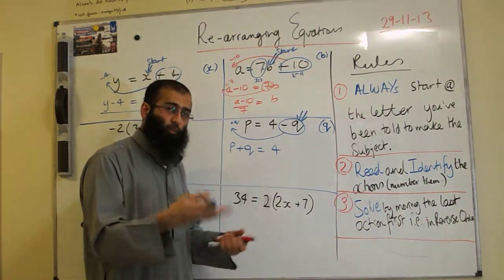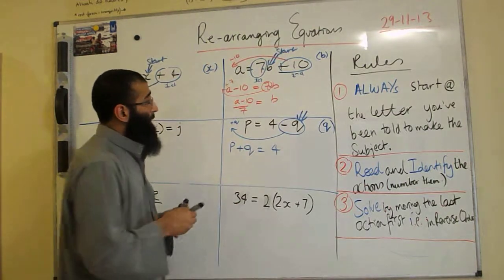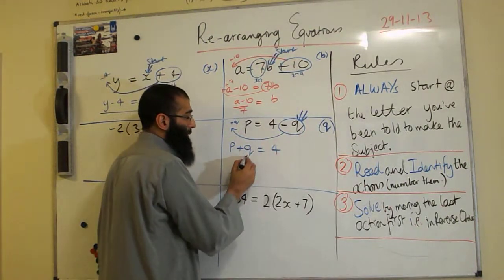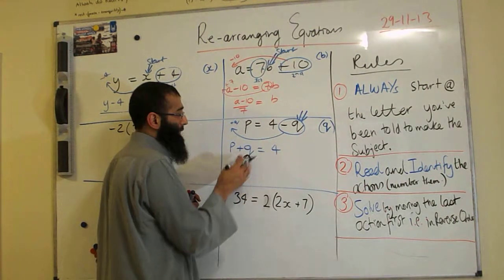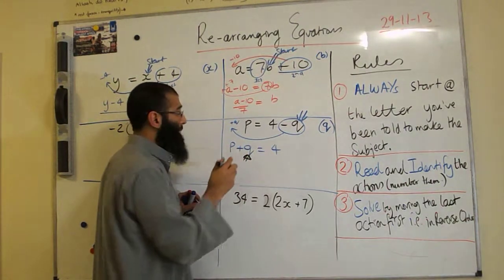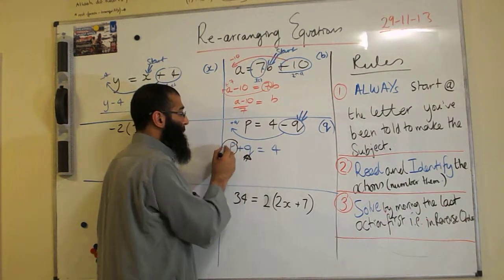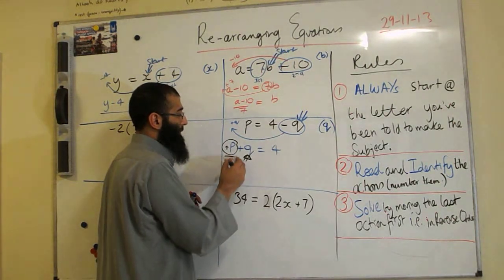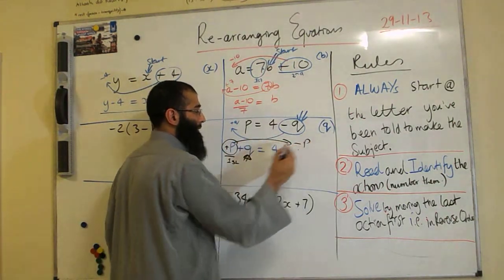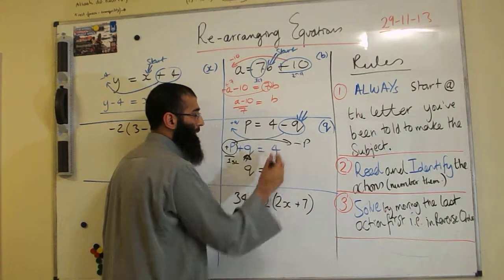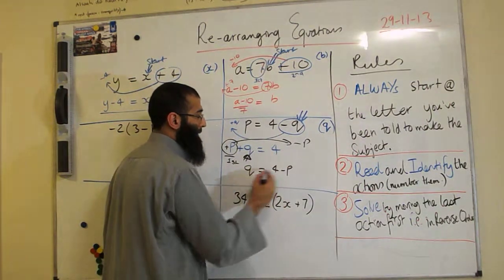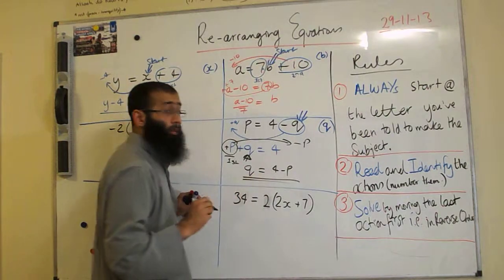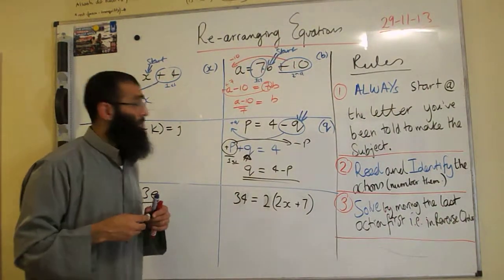And now we're going to start the question for proper now. So we're still going to make Q the subject. We'll start over here. Make Q the subject. It's nice and positive. We're all happy. Q has been added by P. That's our first action here. So the opposite add P is minus P. So 4 minus P is the answer. Are you happy with that?